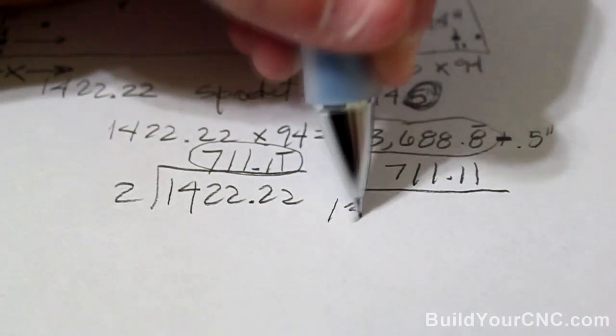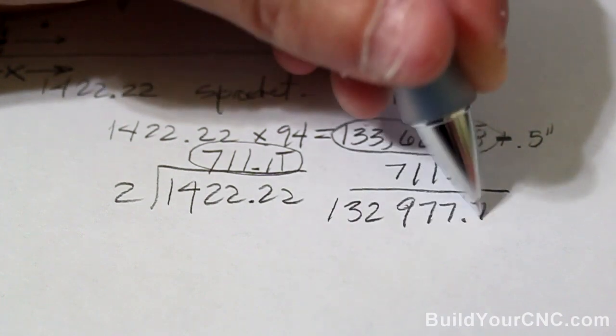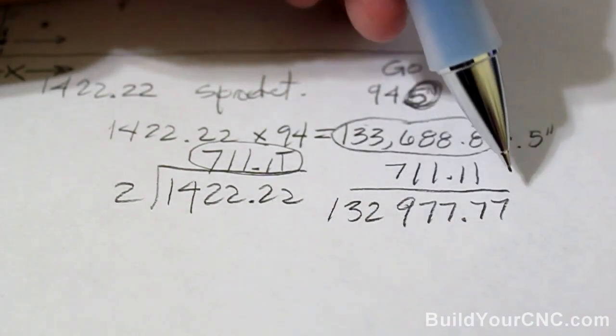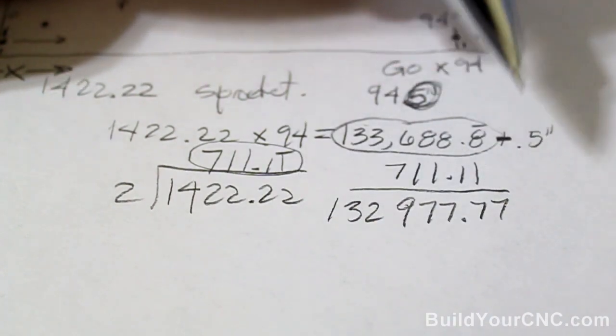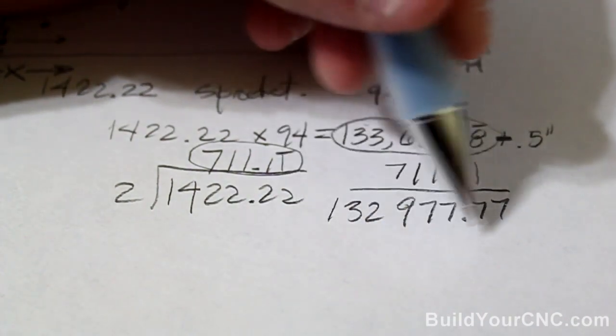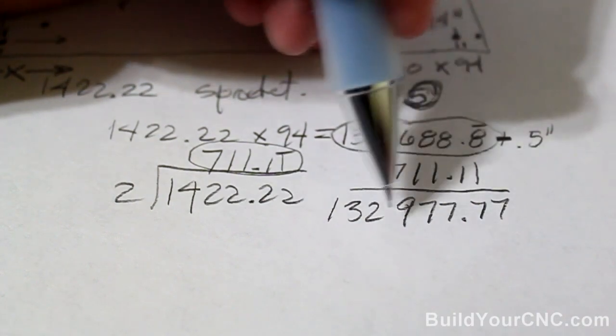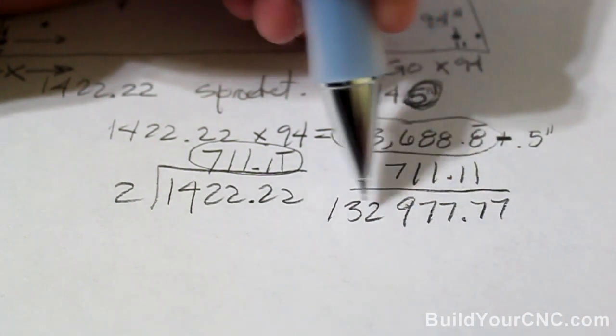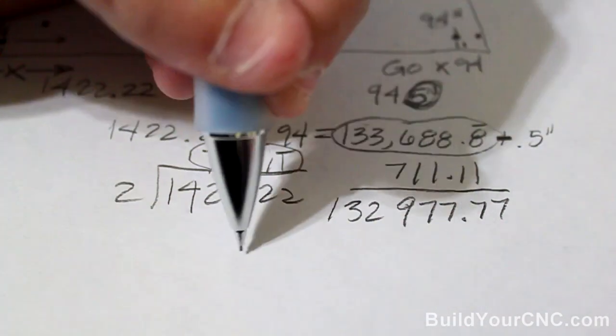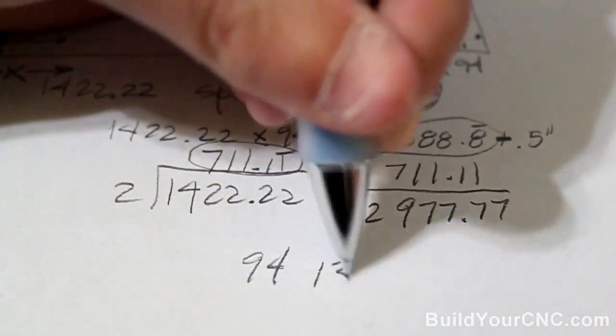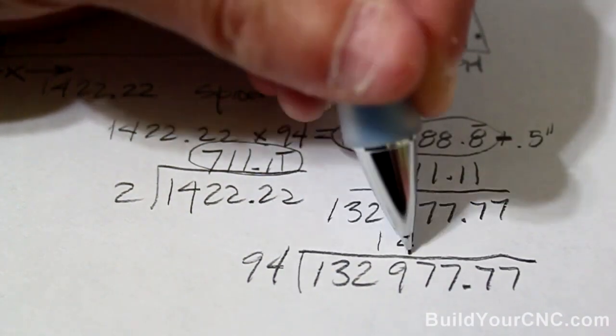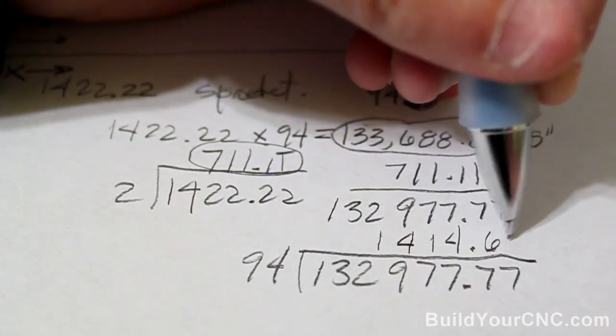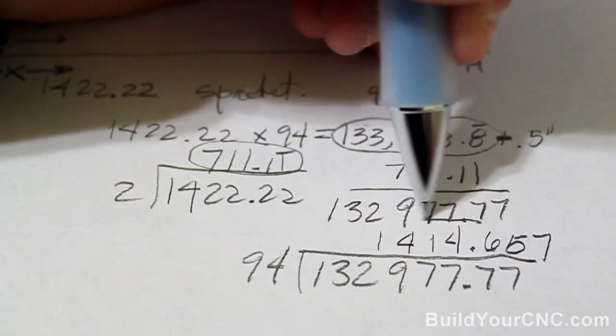And we get 132,977.77. So this represents our adjusted number. This is the number that we really need to show in our machine how to get from 0 to 94. Now, this is not the number we put in the machine, because this is an awfully large number. And this is representative of 94 inches, not 1 inch. So we need to put this back down to 1 inch. So we're going to take this number and then divide it by 94. So 94 divided by 132,977.77 equals 1414.657. So this is our new steps per inch number. Our real world, non-theoretical steps per inch number.